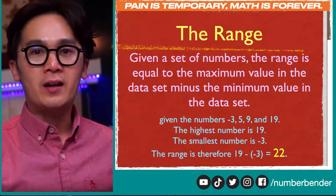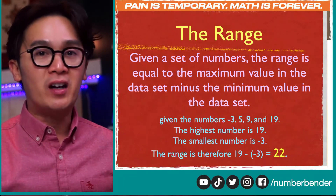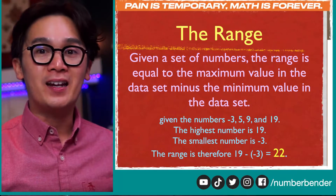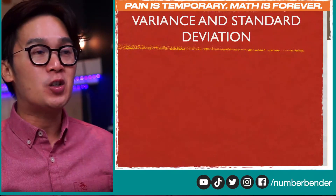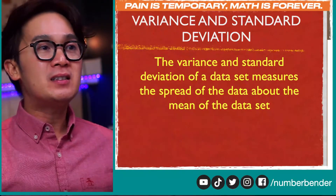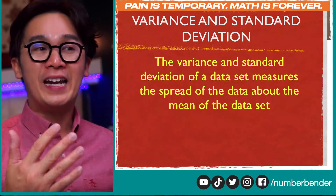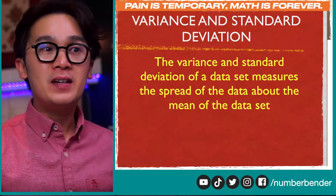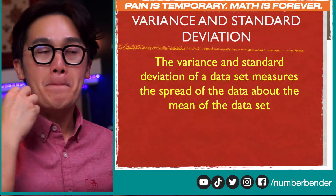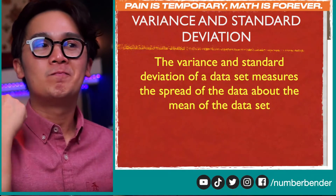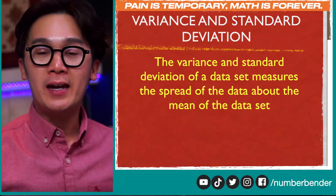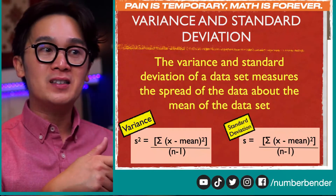There is another way of measuring the spread, also known as the variability or the average differences of our data set in statistics, and that is computing for the standard deviation or the variance. The variance and standard deviation of a data set measure the spread of the data about the mean of the data set. So spread, mean, and data set are the three keywords we're going to be using in calculating for the variance and the standard deviation.